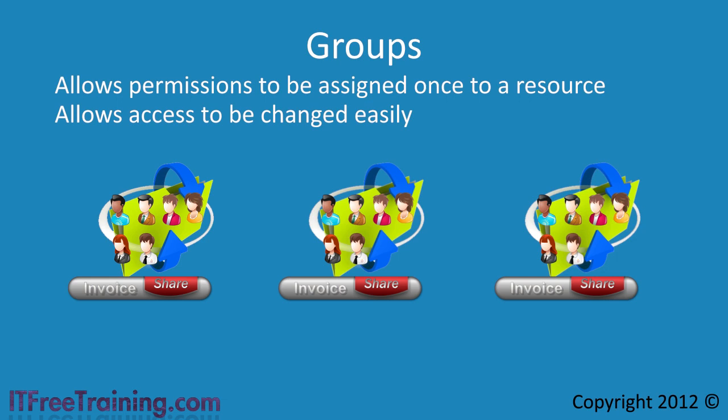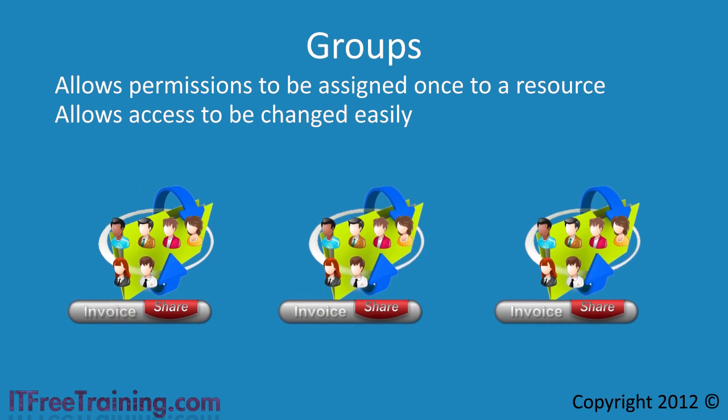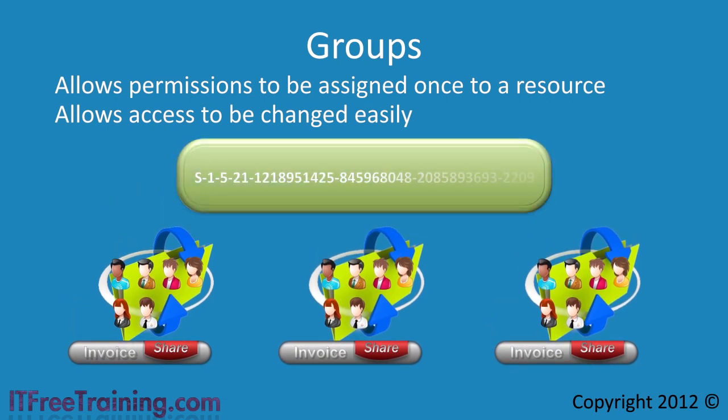To make things simpler, Active Directory allows you to create groups. A group is like a user or computer account in that it has a security identifier, or SID, associated with it. It is possible to create a group without a security identifier. These are mainly used with software like Exchange to create email distribution groups. In the next video I will look at how these kinds of groups work. Once a group is created, it is added to the resource for which you want to control access, just like you would with a user.